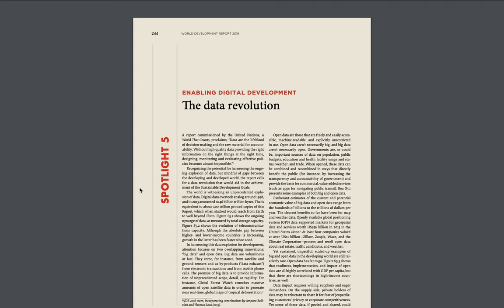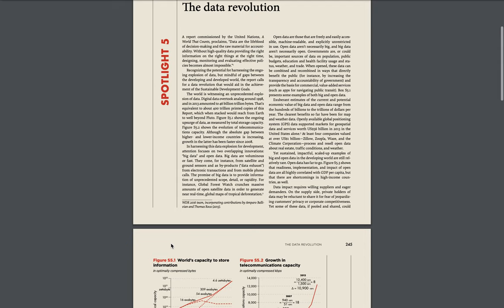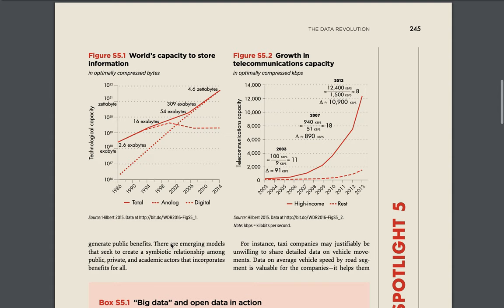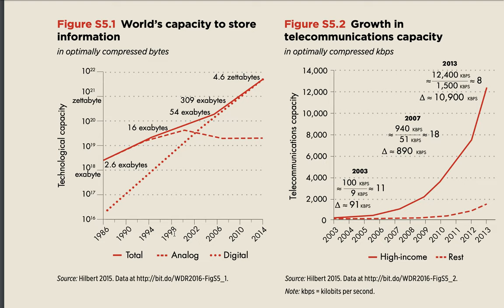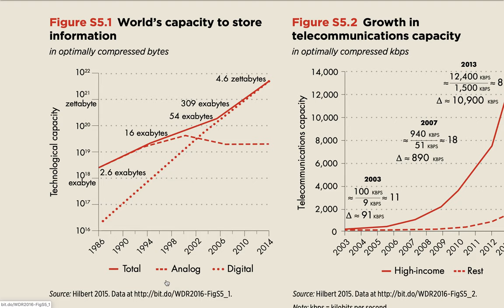Just to give you a sense of how much information there is on the web, there is a report I like from the World Bank called Enabling Digital Development: the Data Revolution. In this report, the World Bank shows an approximation of how much digital information there is in the world. They split information as either analog — paper, newspaper, books, paintings — or digital, meaning anything that lives on the web or on a hard drive. Back in 1986, we had about 10 to the 16 bytes, or close to an exabyte.